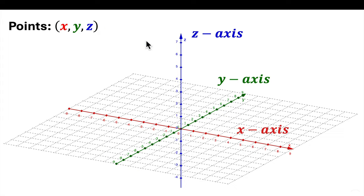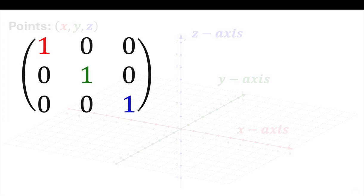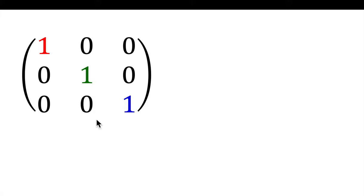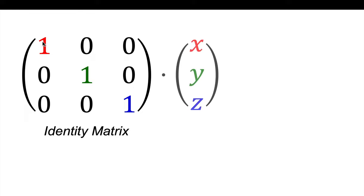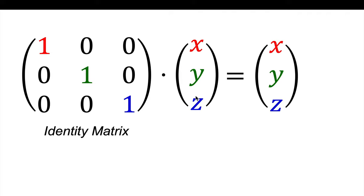In two dimensions, we dealt a lot with 2x2 matrices, so it might not surprise you that we'll often be dealing with 3x3 matrices. This matrix is the identity matrix. What's nice about the identity matrix, if we have zeros everywhere else, it helps us remember that this number will directly be related to whatever X we're looking at, this to whatever Y, and this to whatever Z. Multiplying the identity matrix by a point X, Y, Z still gives us X, Y, Z. It's a really good starting place.